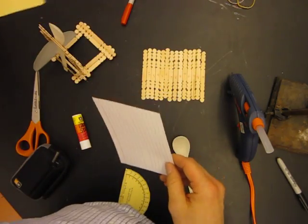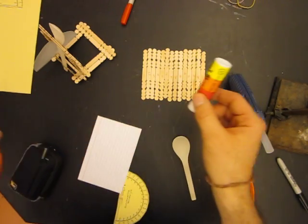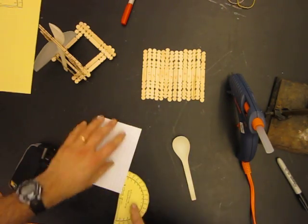You also need a paper protractor, a card, a glue stick, and some scissors to put that part of it together.